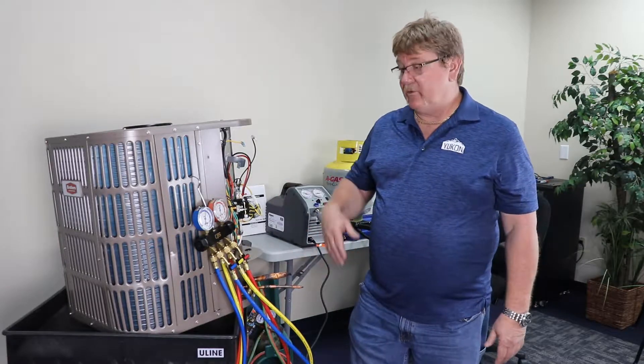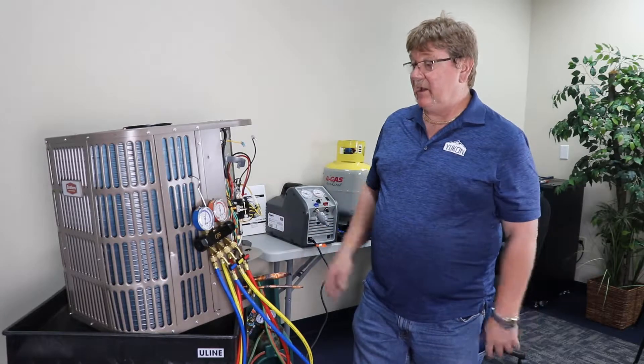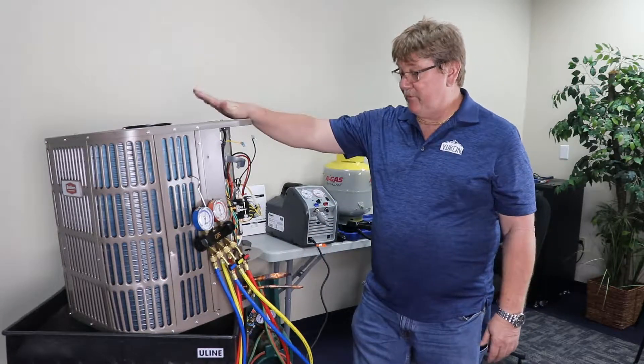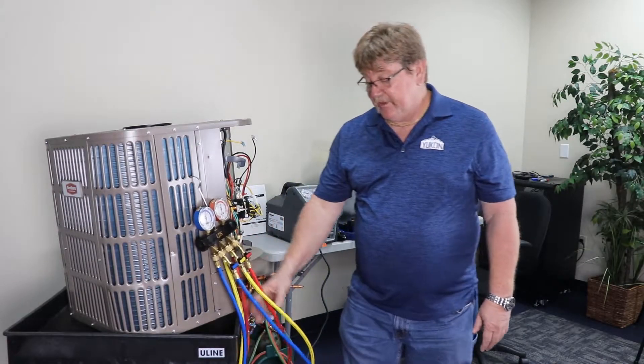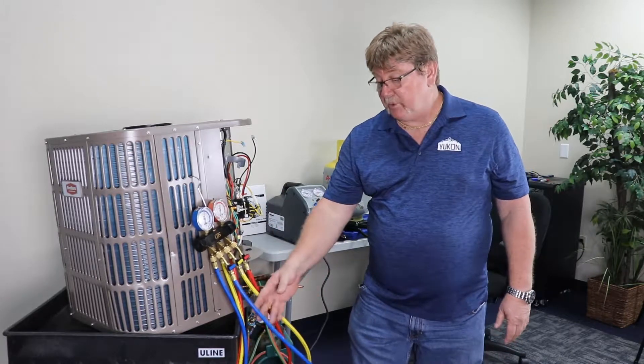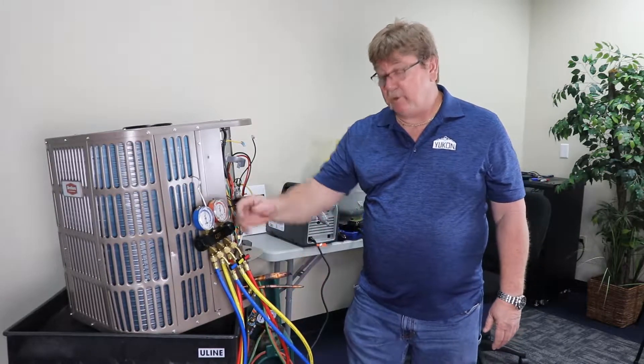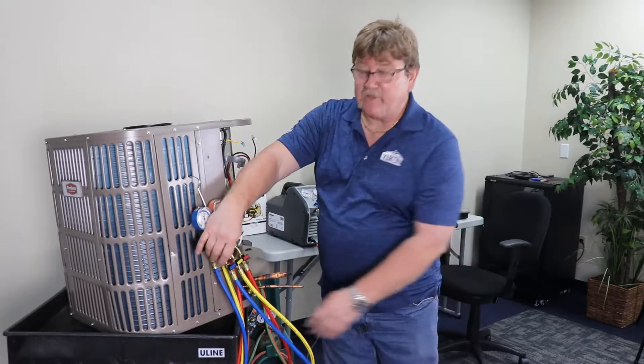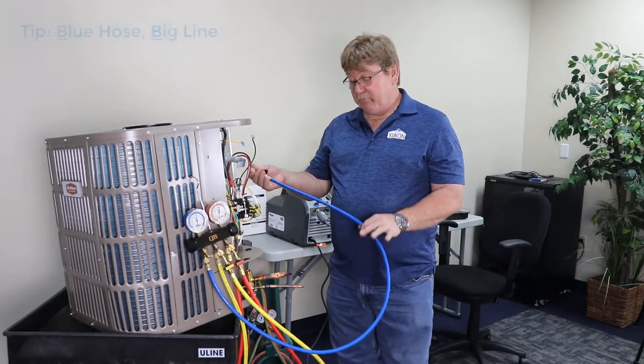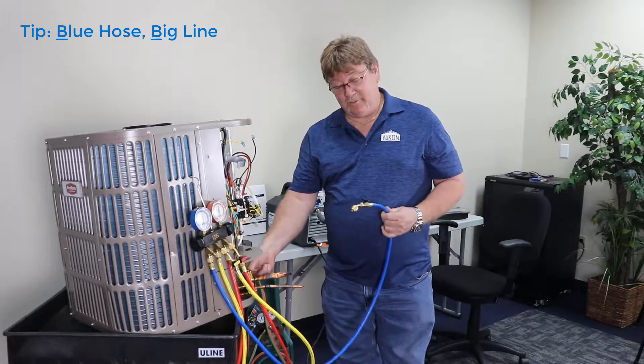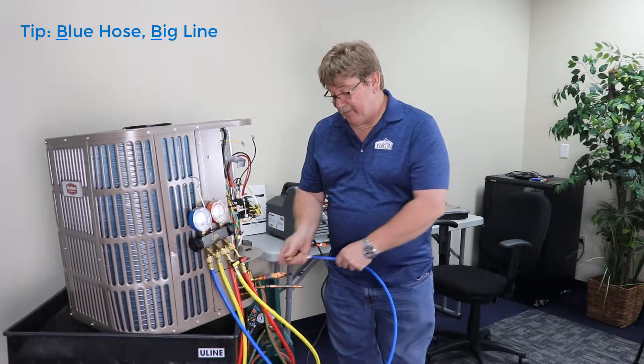So what I want to take you through is just hooking it up and getting it done. We're going to recover the refrigerant out of this unit that we use for demonstration purposes. The first thing you want to do is have your gauge manifold with your color-coded hoses: blue, yellow, and red. Blue typically goes on the low side line. The way I remembered it when I was younger and starting out was blue hose, big line, so we're going to put the blue hose on the big line.